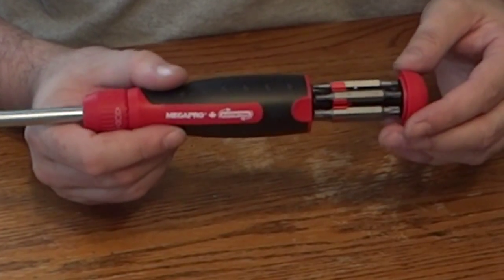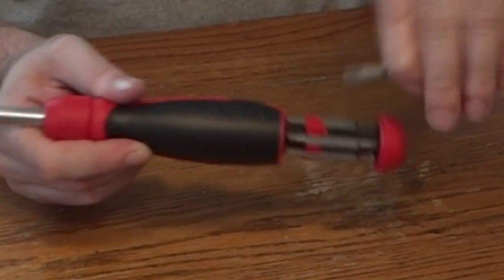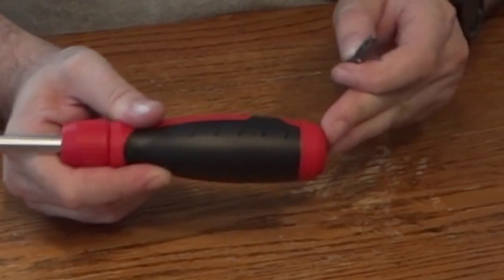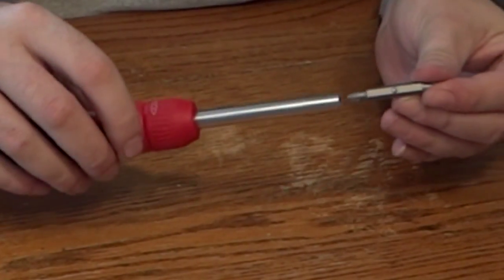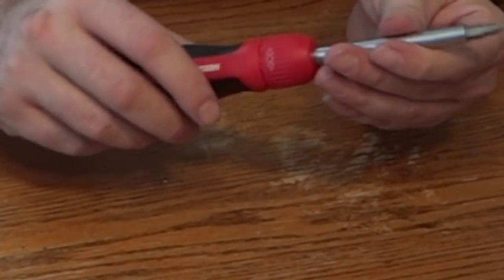A similar idea. Remove the bit from the clip. Close it up. Insert. And again we have the ball bearing which is going to keep the bit locked in there.